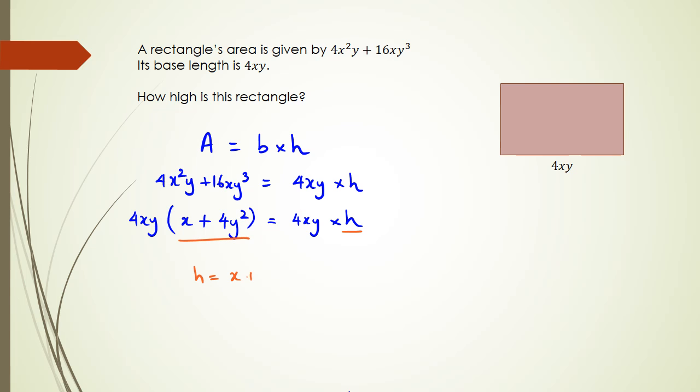Now remember I showed you another method earlier in this video. If I were to use that method I could say that 4x²y + 16xy³ equals 4xy times h, so I divide both sides by 4xy.